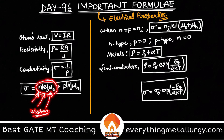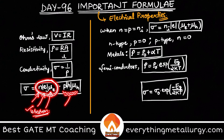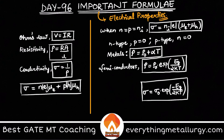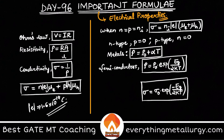We also have holes contributing to conductivity. Here p is the hole concentration, and the charge magnitude is the same as the electron — |e| = 1.6 × 10⁻¹⁹ coulombs — and μh is the mobility of holes. So the total semiconductor conductivity is σ = n|e|μe + p|e|μh.